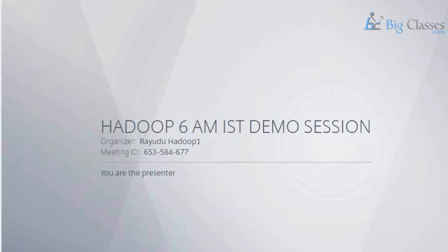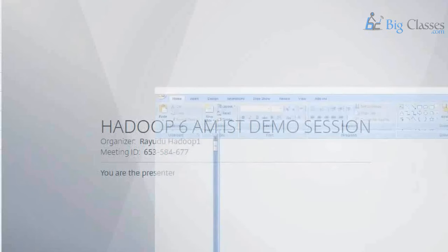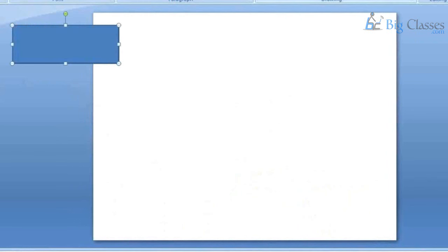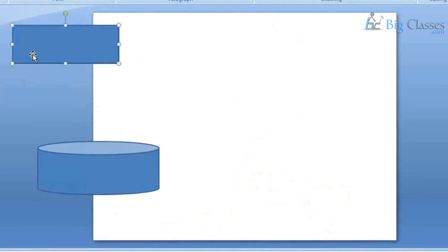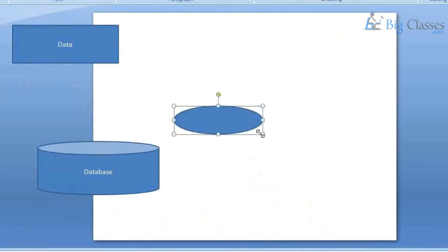Let us try to define big data in very simple terms. Initially there was no term like big data, small data, medium data — we had only data. Data is expected to be stored in a storage system, which we call a database. The databases we have can be classified into two types: transaction systems and analytical systems.